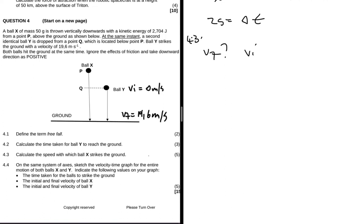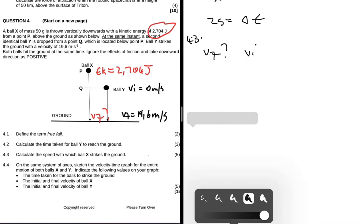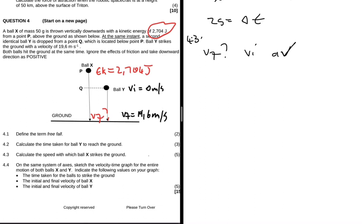We can find vi because we are given the kinetic energy. We are told that EK equals 2.704 joules. vf is our unknown, we have the acceleration obviously, and we are told that the two balls hit the ground at the same time, so we also have delta t. We're going to say vf equals vi plus a times delta t, but before that we need to determine vi.